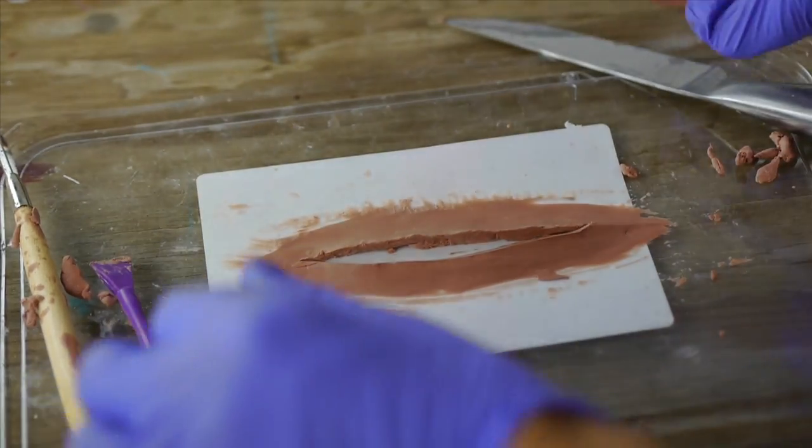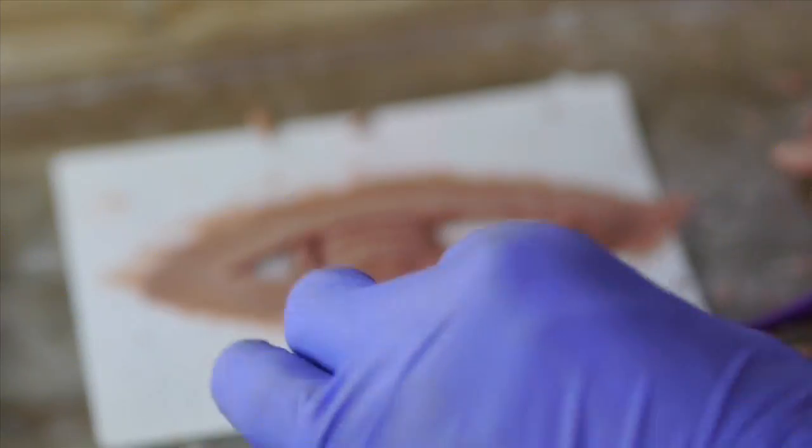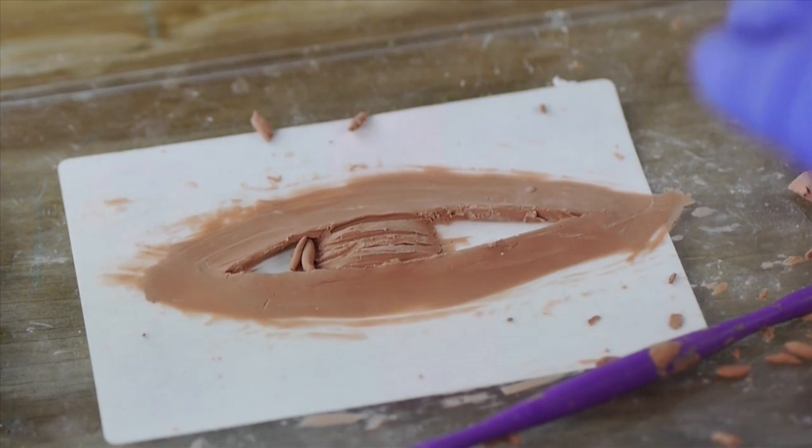Since this wound is going to be a slit throat, I decided to add these small vertical sausage shapes to define the muscle fibers on each side.